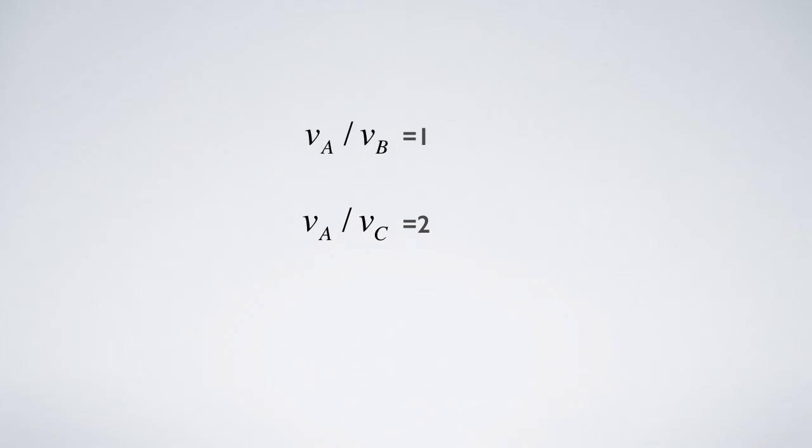Perhaps even the remaining two equations are inconsistent as well. For example, the two VA may be different. Should we eliminate another equation?